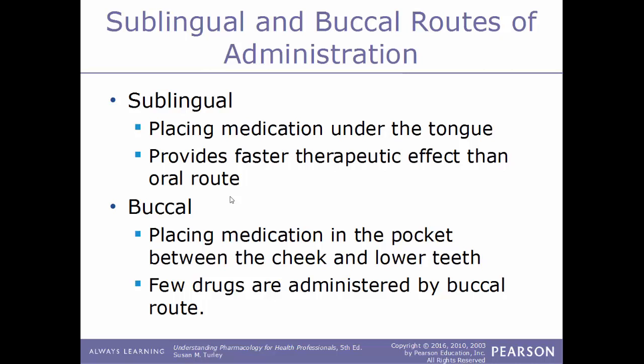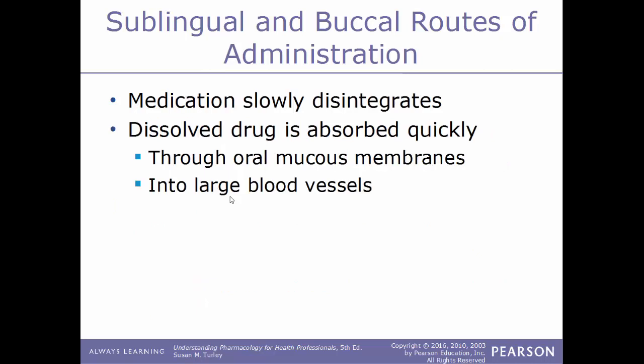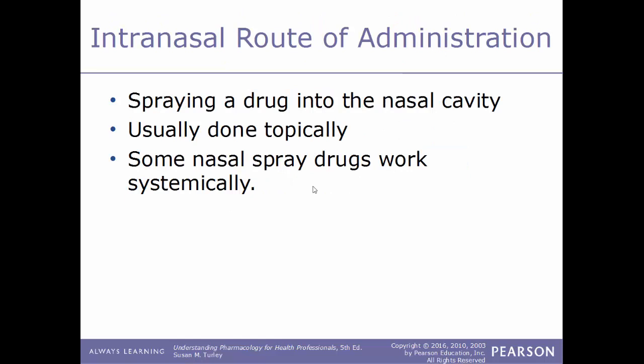The sublingual route is where medication is placed underneath the tongue, providing a faster therapeutic effect than the oral route because it dissolves quickly and enters the bloodstream right away. The buccal route places medication in the pocket between the cheek and the lower teeth — this is not very common. For both sublingual and buccal routes, medications slowly disintegrate and are absorbed quickly through the mucous membranes of the mouth, entering the bloodstream via larger blood vessels.